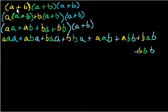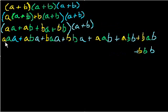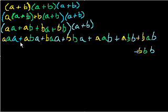So this is the expansion of (a + b) to the third power — we haven't simplified it at all, and I did that for a reason. Every term here has exactly three numbers being multiplied. The yellow number comes from the first yellow (a + b), the green number from the middle (a + b), and the blue number from the right-hand (a + b).